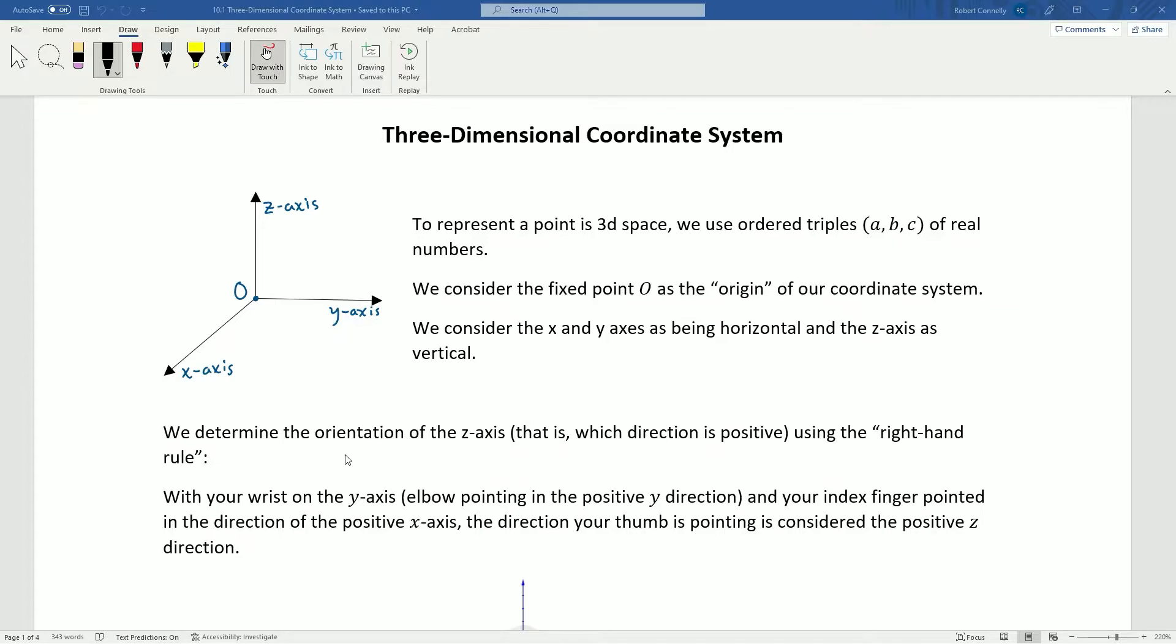So we determine the orientation of the Z axis, that is which direction we call positive, using the right hand rule. So the right hand rule basically says you imagine lining your wrist along the Y axis with your elbow pointed in the positive Y direction, you point your index finger in the direction of the positive index axis, and you stick your thumb up. Wherever your thumb is pointing is what we call the up direction, the positive Z direction.